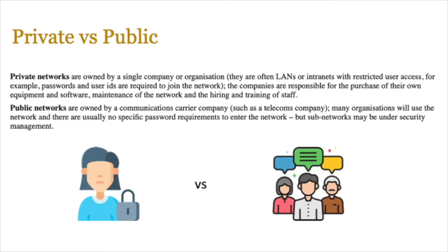Networks can be of two types - private or public. Private networks are owned by generally a single company, like a school, and they often have LANs or intranets with restricted user access such as passwords and user IDs. The company is responsible for purchasing their own equipment and software, maintaining the network, and hiring and training staff. Public networks are owned by communications carrier companies such as your local telephone company or ISP. Many organizations use public networks and there's normally no password protection required. However, sub-networks within them might have access requirements - so you can have layered combinations of secured sub-networks connecting through public networks.